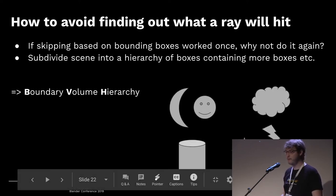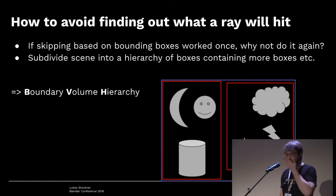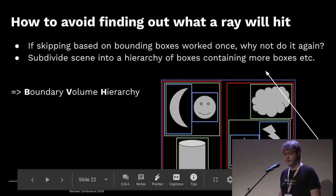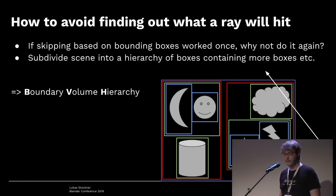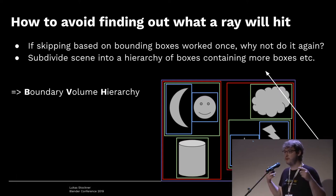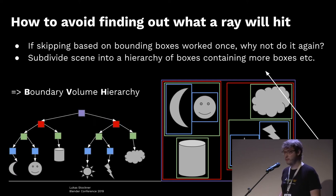Here's a quick example. We have some shapes. We put a box around all of them — if we miss that box, we skip everything. If we do hit it, we continue subdividing. We subdivide again and again until each object has its own box. A ray comes in, we test it against the top-level box, then test against sub-boxes, skipping entire branches we miss, until we only test triangles of the relevant object. For those with a computer science background, this is basically a binary tree — in practice it doesn't have to be binary.